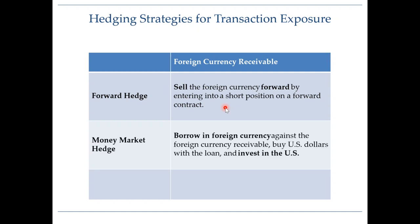The second hedging strategy is a money market hedge. Here you borrow in foreign currency — in pounds — against your foreign currency receivable. You then sell those borrowed pounds at the current spot rate, converting them into dollars, and invest those dollars in the US. In one year's time, when you repay your loan, you simply use the £100,000 foreign currency receivable you receive from the UK to close out the loan.